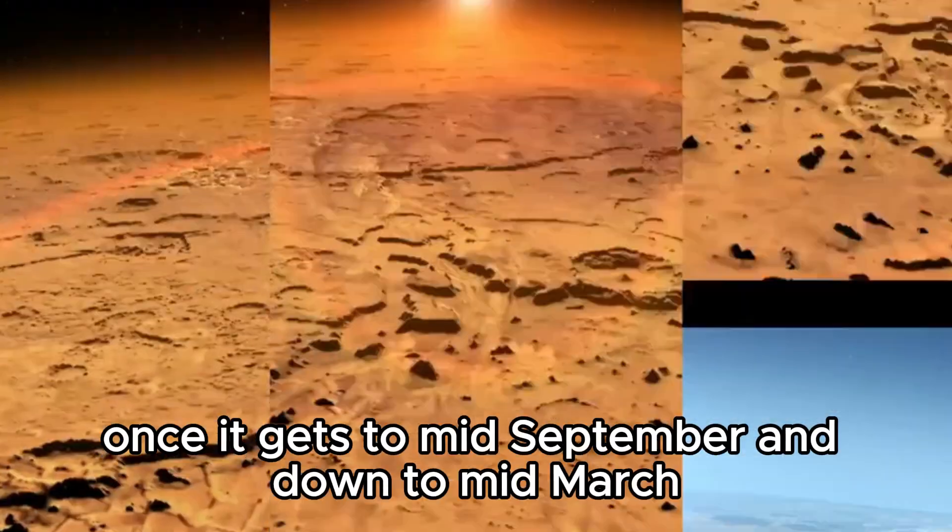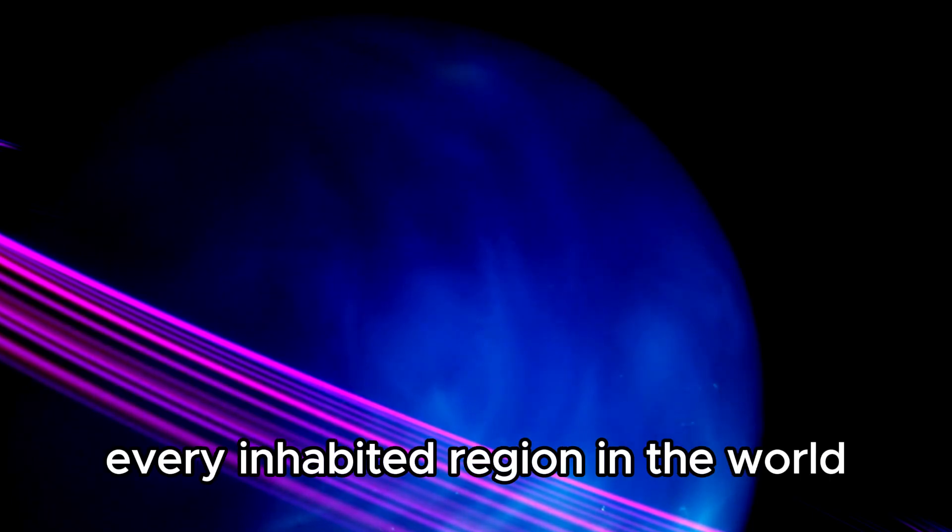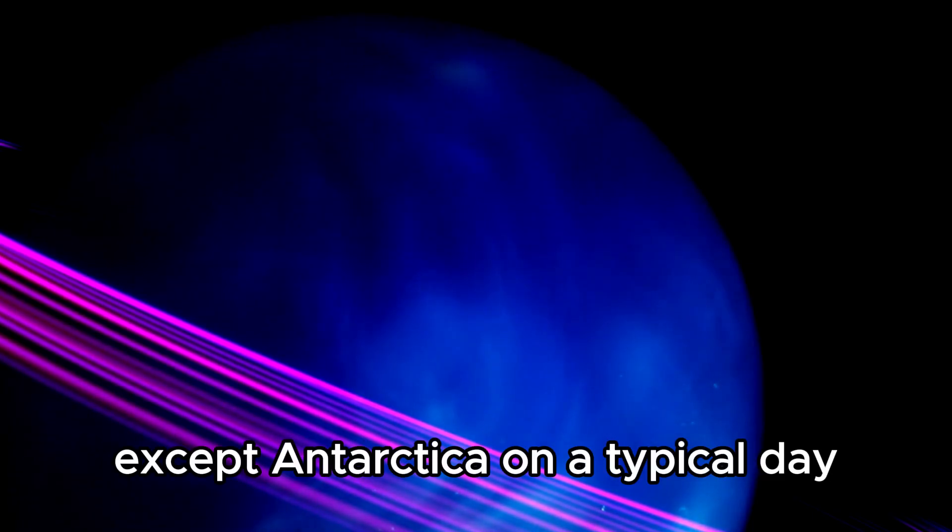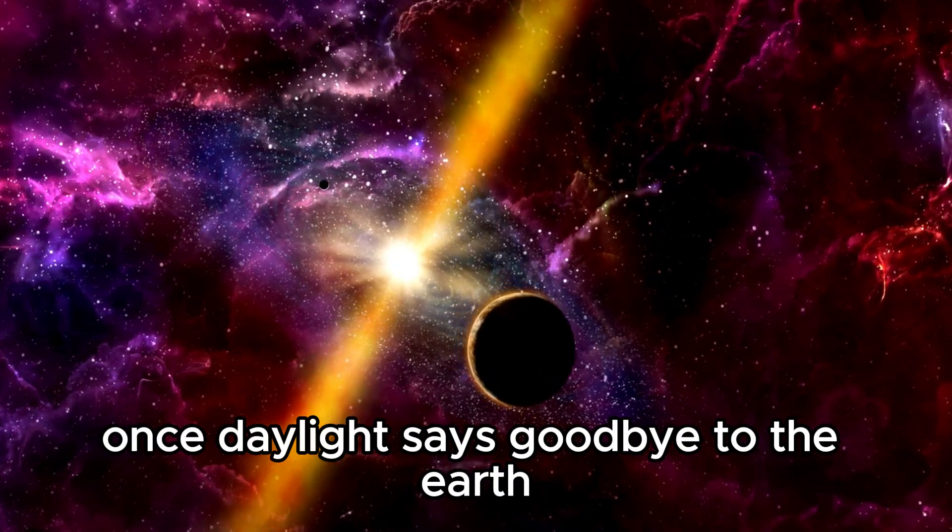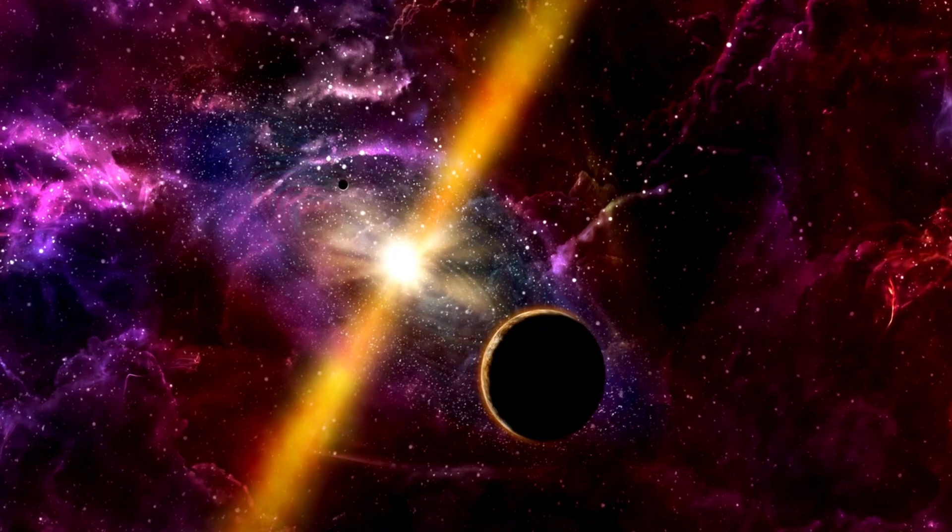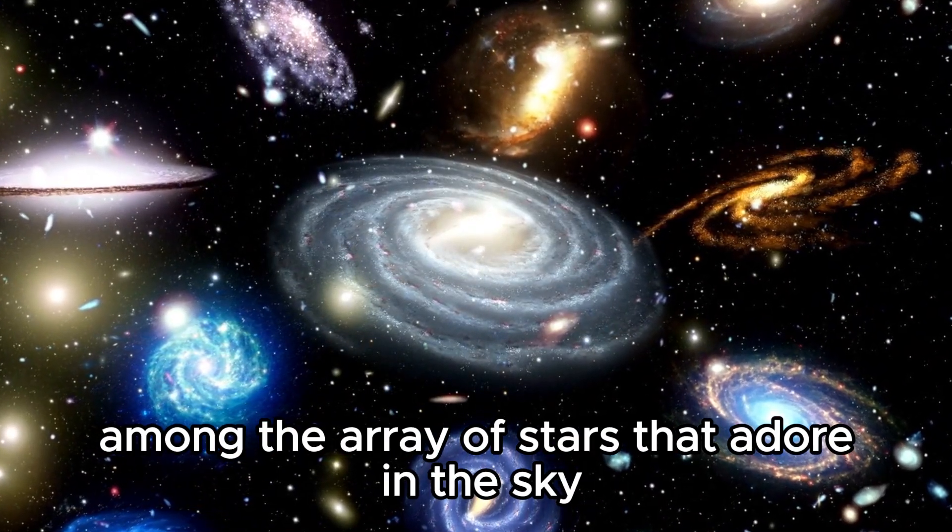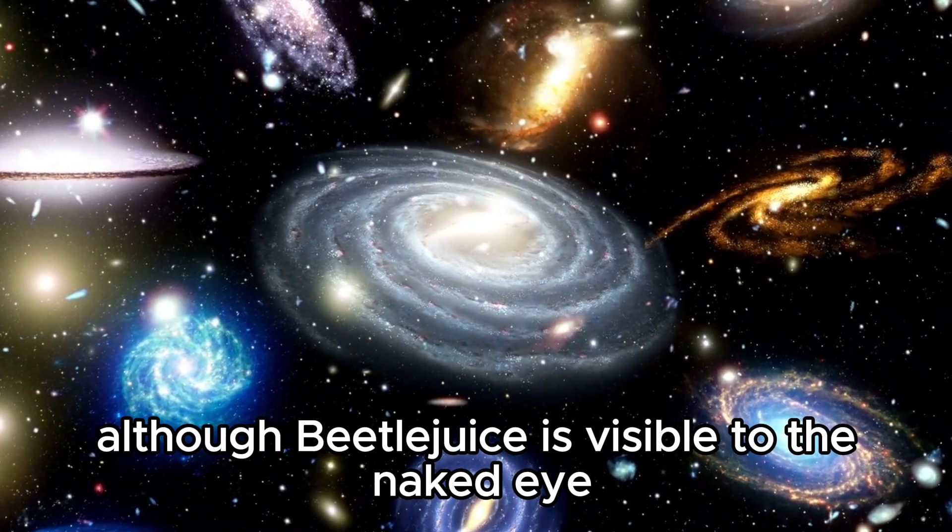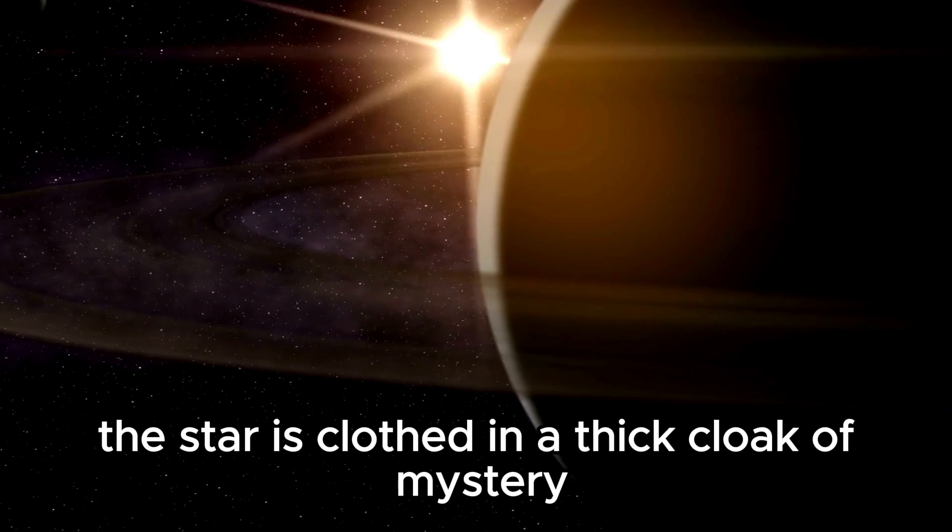Once it gets to mid-September and down to mid-March, the star is visible to virtually every inhabited region in the world, except Antarctica. On a typical day, once daylight says goodbye to the Earth and the night's darkness sets in, it is possible to spot Betelgeuse among the array of stars that adorn the sky. Although Betelgeuse is visible to the naked eye, the star is clothed in a thick cloak of mystery.